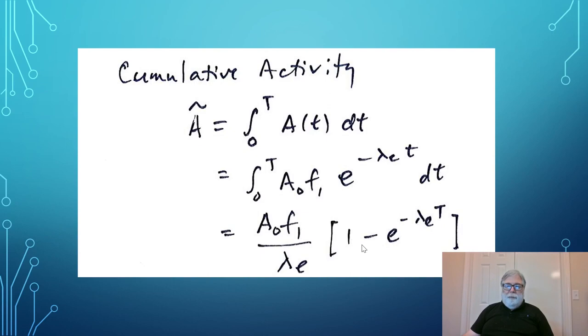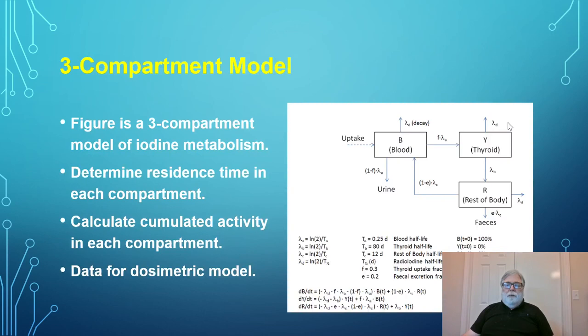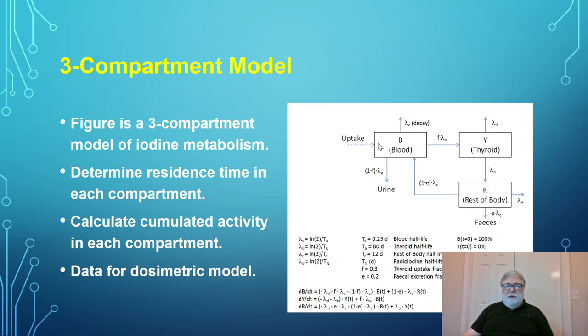Now we look at a three-compartment model for iodine metabolism. Material is taken up through the blood — by injection, from the intestines, or from the lungs. Some is eliminated in the urine, some taken into the thyroid, and some into the rest of the body. It may be released from the thyroid as thyroxine, sent to the rest of the body, or recirculated. The equations are more complex but still result in exponential functions.